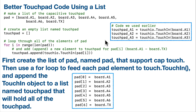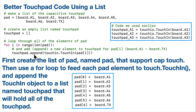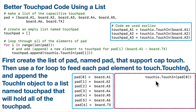Here's our trick. Instead of creating this line by line, we're first going to create an empty list that will eventually hold all of the touch_in objects, but it starts out empty. We'll call this touch_pad and set it equal to empty square brackets — nothing inside, length zero. But we'll loop through the pad list, board.A1 through board.TX, and one by one we'll take pad[i] and feed that pad element into the touch_in class, create our touch_in object, and then append it to the array.